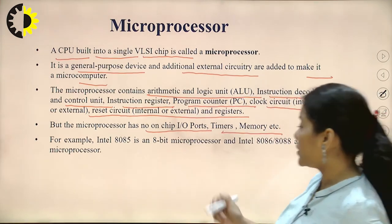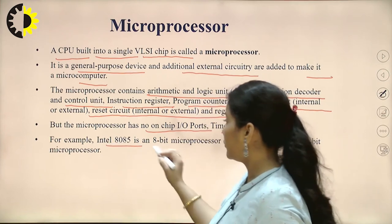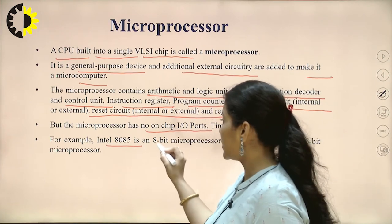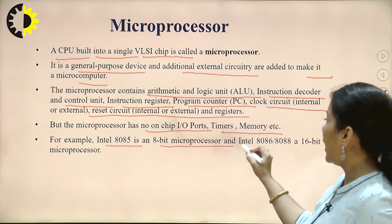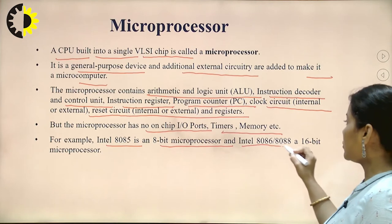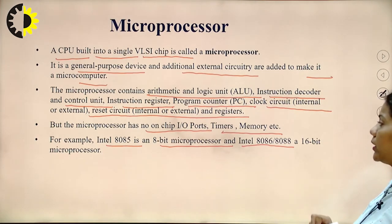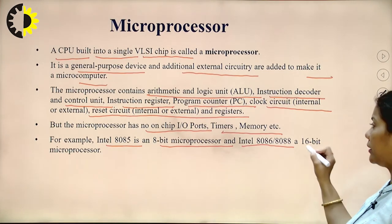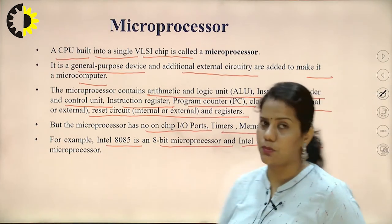The microprocessor has no on-chip input/output ports, timers, or memory. Only the register set, ALU unit, and control unit are present on the chip. For example, the Intel 8085 is an 8-bit microprocessor and the Intel 8086 and 8088 are 16-bit microprocessors.